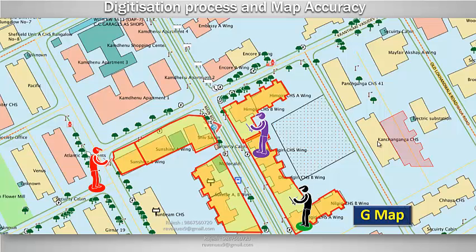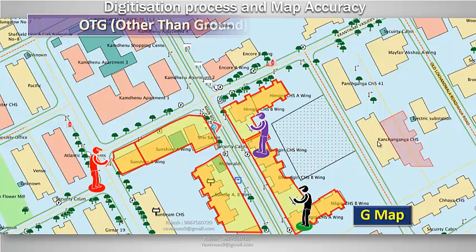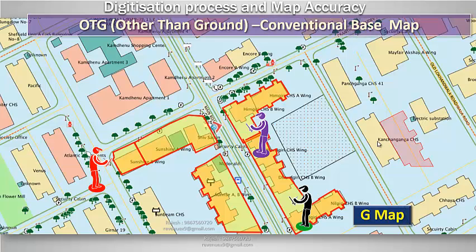In urban cities, this is a prime reason we have to capture ground floor details on separate layers, which can be called as G map. The standard conventional base map should be used as the other-than-ground-floor map, which can be called as OTG map.